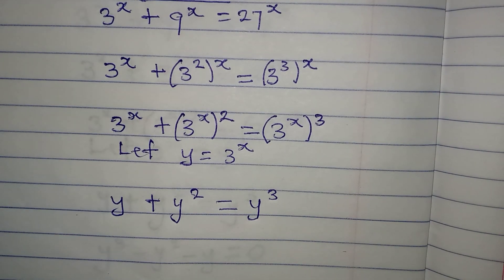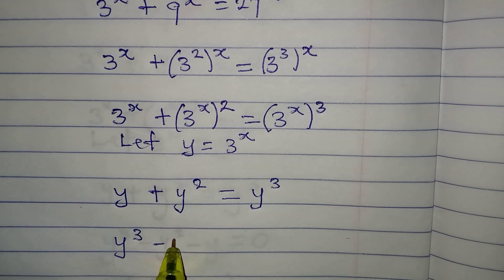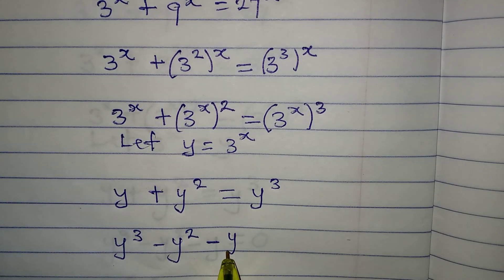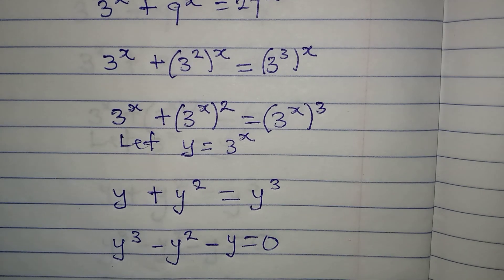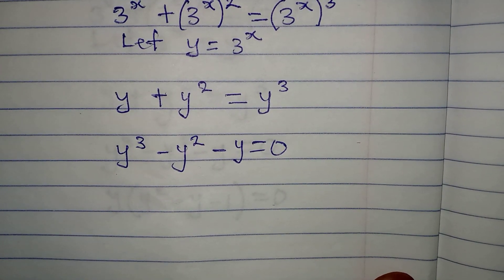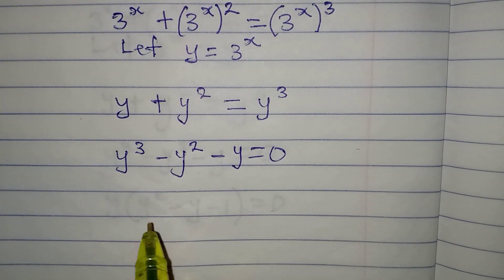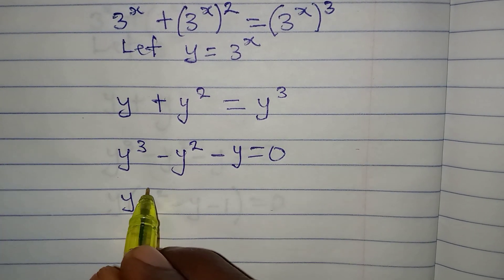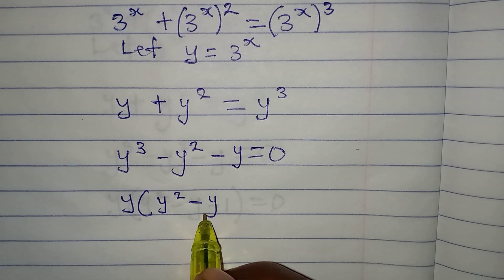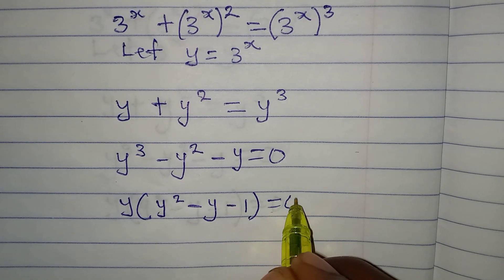Now arrange this properly: we have y cubed minus y squared minus y equal to 0. Y is common to all three terms, so if we factor out y, we get y times (y squared minus y minus 1) equals 0.